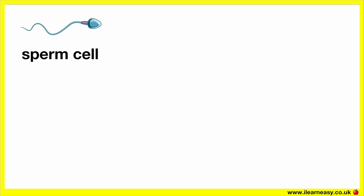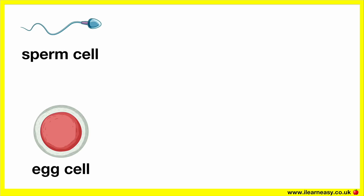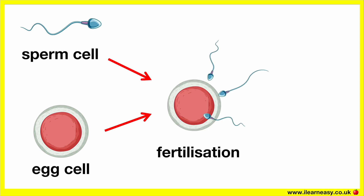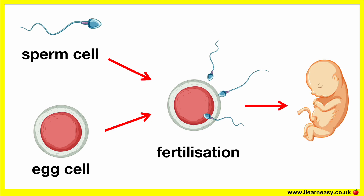This is a sperm cell. This is an egg cell. Fertilisation is the process in which the nucleus of a sperm cell fuses with the nucleus of an egg cell to produce a zygote. The zygote will eventually grow into offspring.